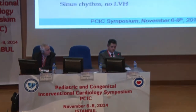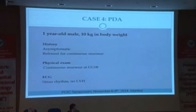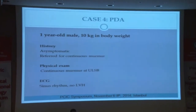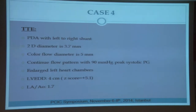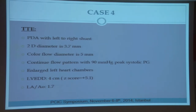Our patient is a one-year-old male, 10 kg in weight. He was asymptomatic, referred to us for his continuous murmur. On physical examination, there was a continuous murmur at the upper left sternal border. The ECG was in sinus rhythm. Transthoracic echocardiography showed a PDA with left-right shunt; the diameter of the PDA is 3.7mm on 2D and 5mm on color flow images. With CW Doppler, there was continuous flow with a 90 mmHg peak systolic gradient. Left heart structures were enlarged and the score was 5.